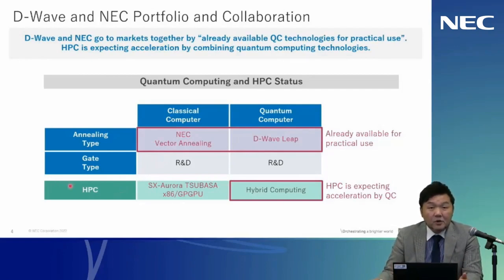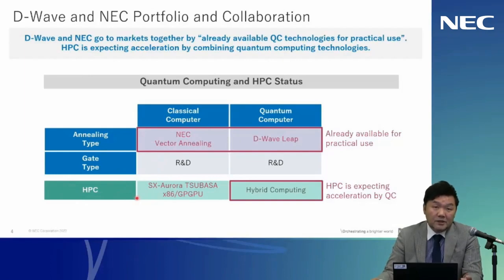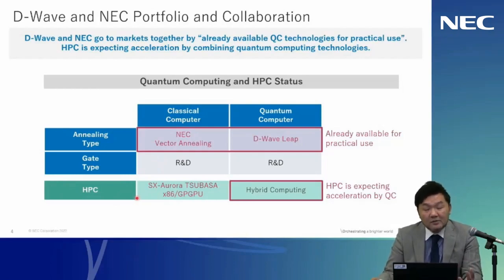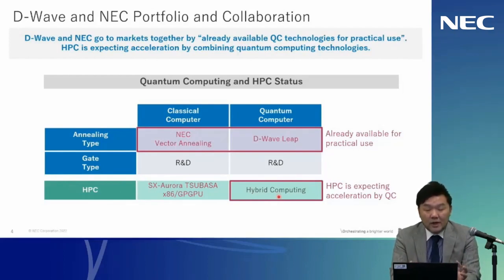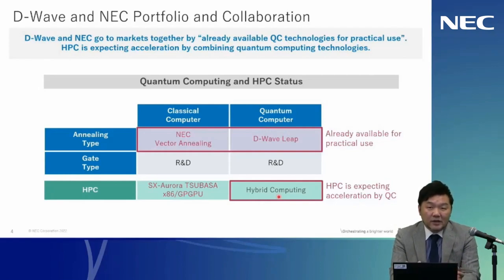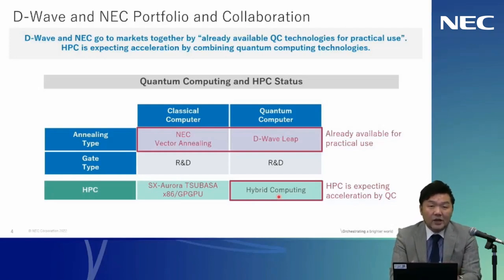From the HPC point of view, HPC or supercomputing on classical computers is pure supercomputing. NEC has the SX-Aurora Tsubasa vector supercomputer, and also provides x86 clusters and GPGPU clusters. HPC combined with quantum computer is hybrid computing between supercomputer and quantum computer, which is currently a hot topic. The HPC side is expecting to be accelerated by combining quantum computing, and NEC and D-Wave are continuously discussing this kind of acceleration into the future.